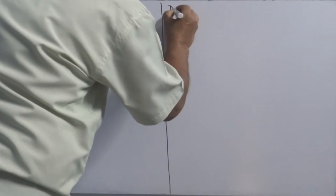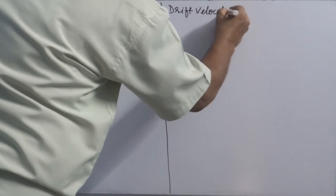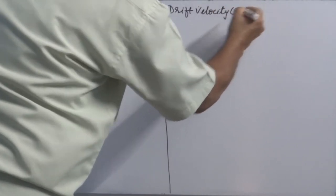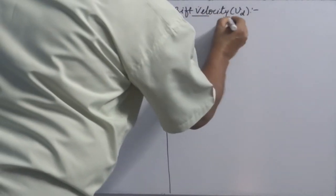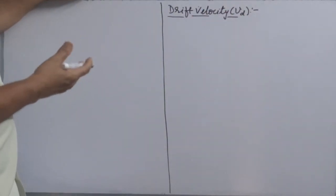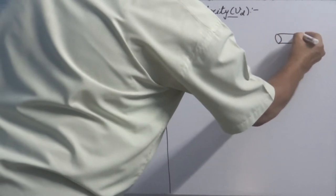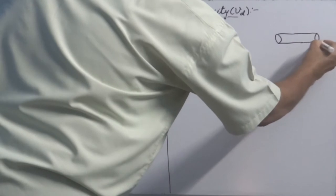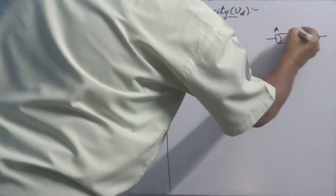Let's see the expression for drift velocity. You will come to know what drift velocity is. When no potential difference is applied across the conductor, it means there is no electric field inside the conductor, but free electrons inside the conductor move randomly, and the resultant or average velocity comes out to be zero.